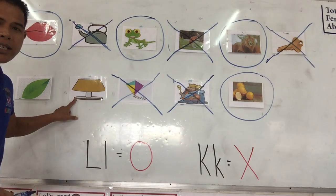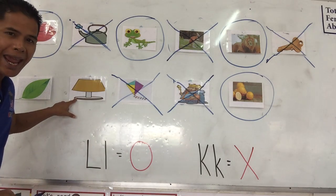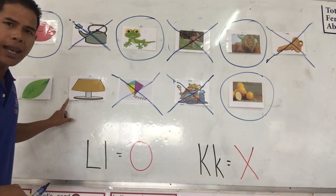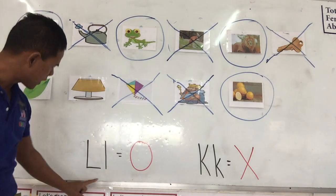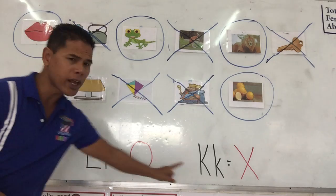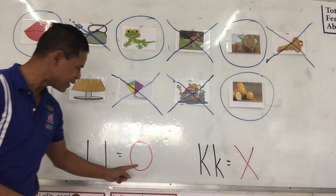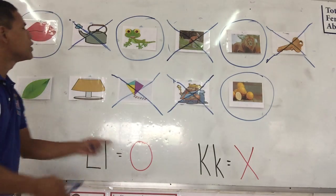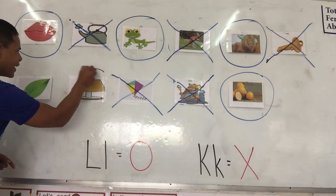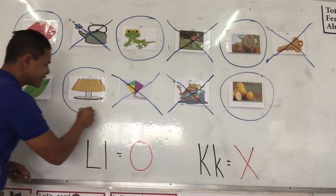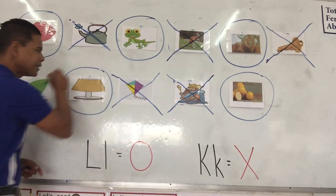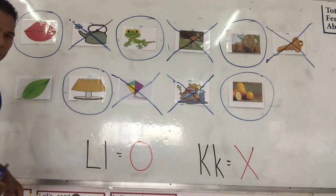Next one is lamp. Lamp. Is it the letter L or the letter K? Yes, letter L. So we circle it. Lamp.